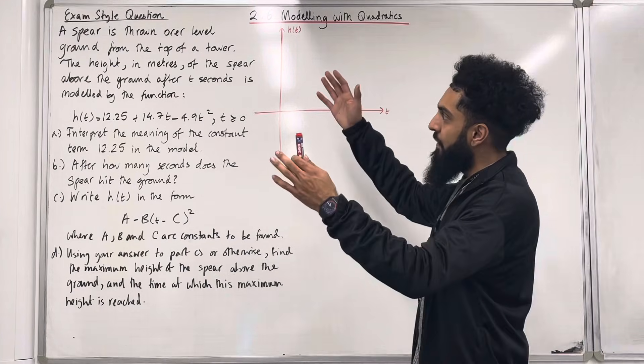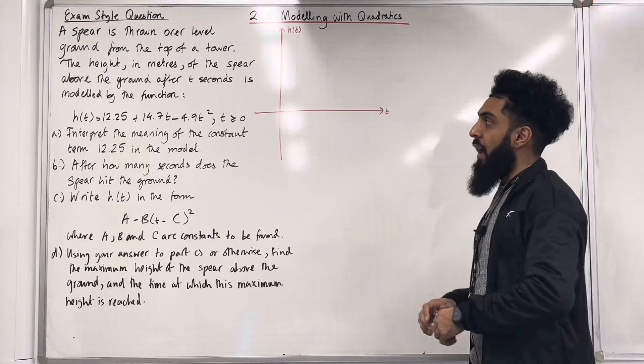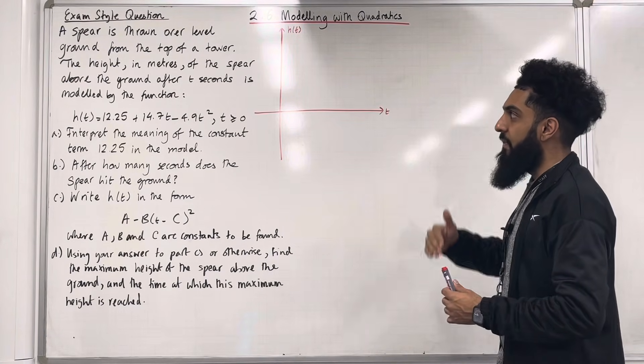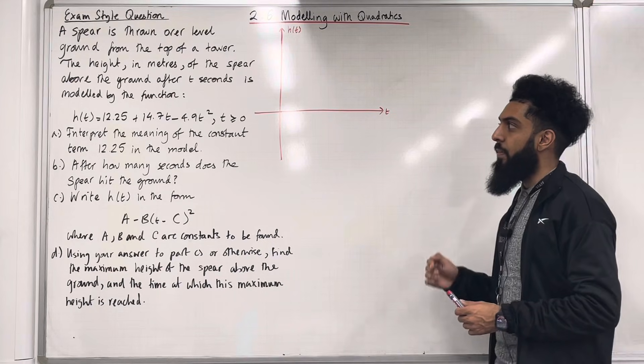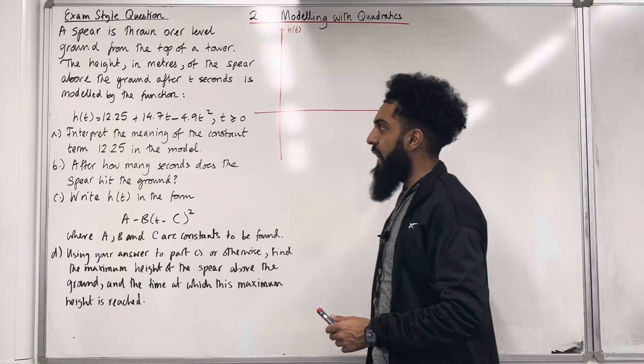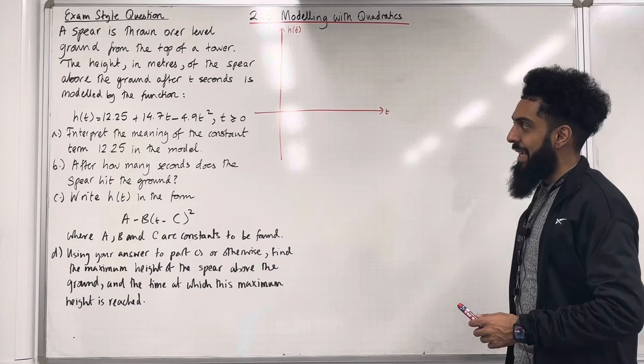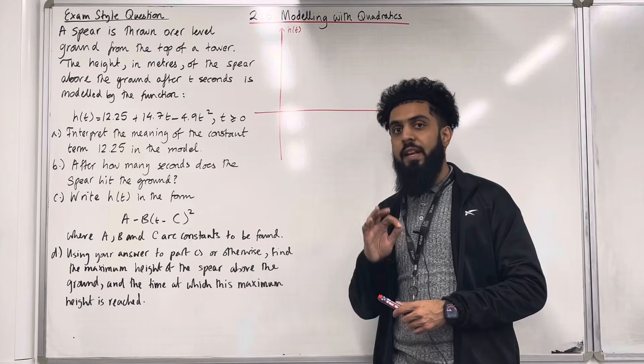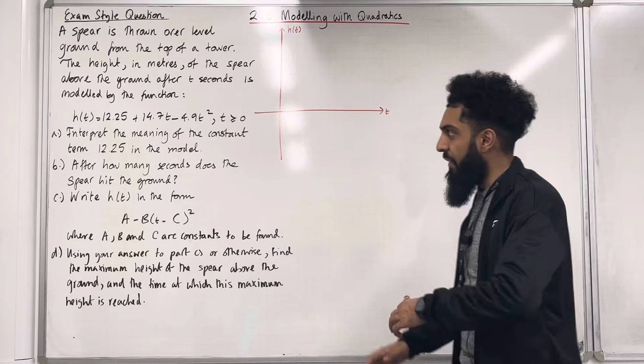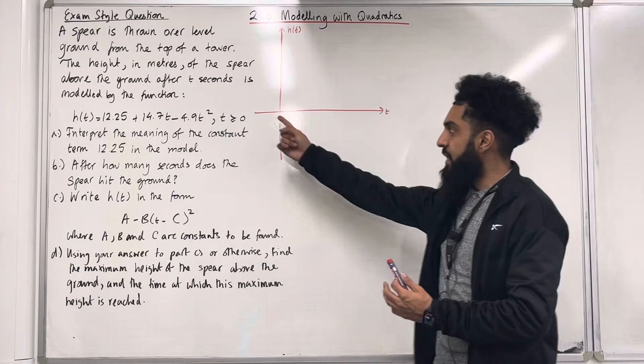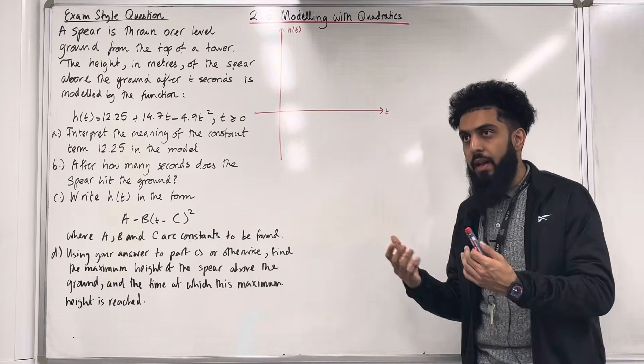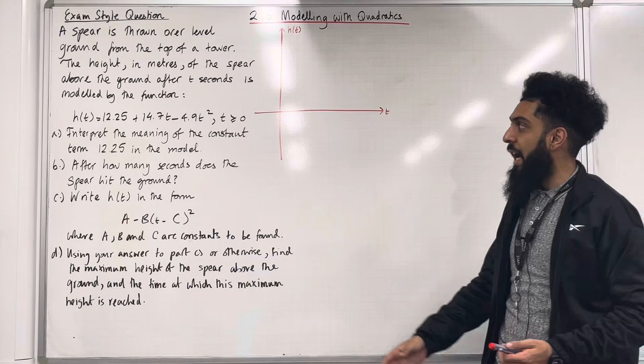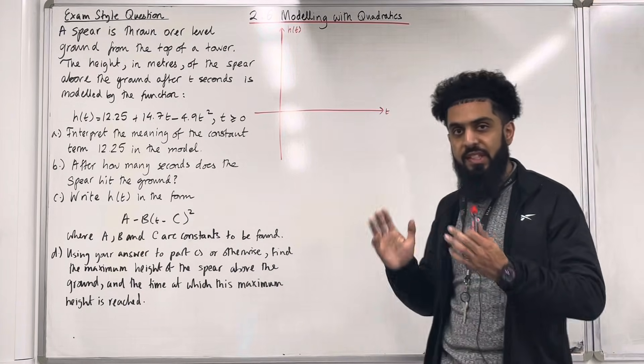A spear is thrown over level ground from the top of a tower. The height in metres of the spear above the ground after t seconds is modelled by the function h(t) = 12.25 + 14.7t - 4.9t² where t is greater than or equal to 0. So we have a restriction. Why is this restriction valid? Well time can never be negative. Time is always greater than or equal to 0.